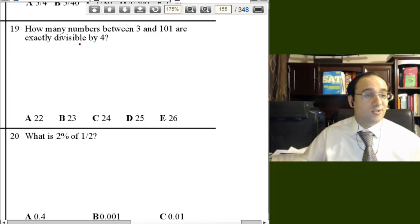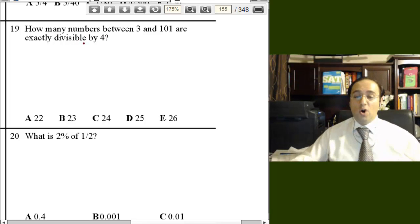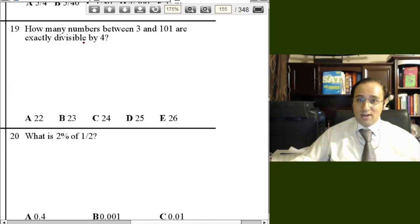How many numbers between 3 and 101 are exactly divisible by 4? Oh, now that's the one we just did, right? See, again, as I said, the questions do repeat themselves.